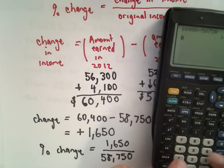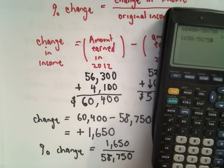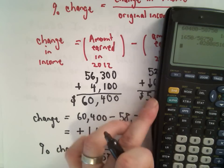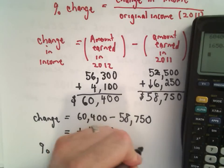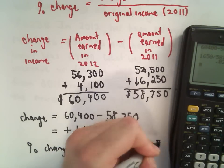So again, I'm going to use my calculator here. So $1,650 divided by $58,750. Okay, so this is giving it to me in a decimal form, 0.028.